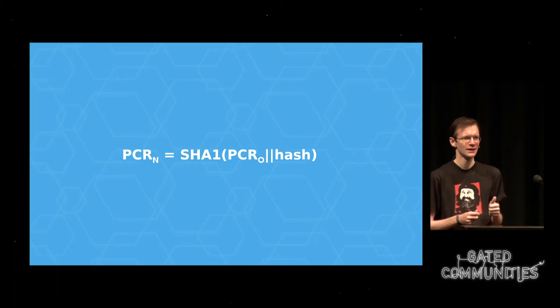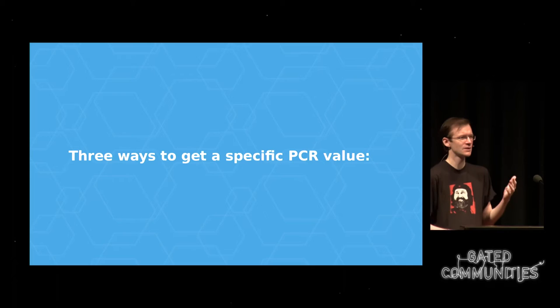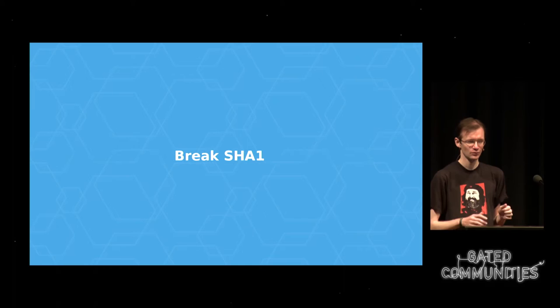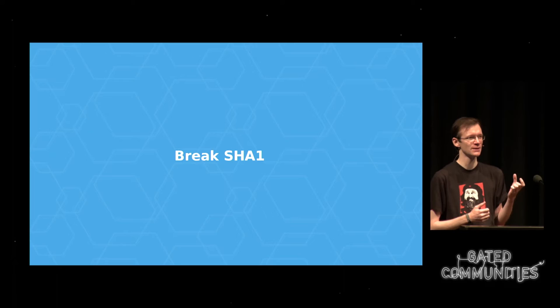This means there are basically three ways to get a specific PCR value. The first is to break SHA-1: if you can figure out a way to add 20 bytes of arbitrary data to the existing PCR value such that you control the new SHA-1 value, you can completely break trusted boot. If any of you know how to break SHA-1, a lot of people are going to have very bad days. I'm going to ignore this possibility — it's far too terrifying and we can't do anything about it anyway.